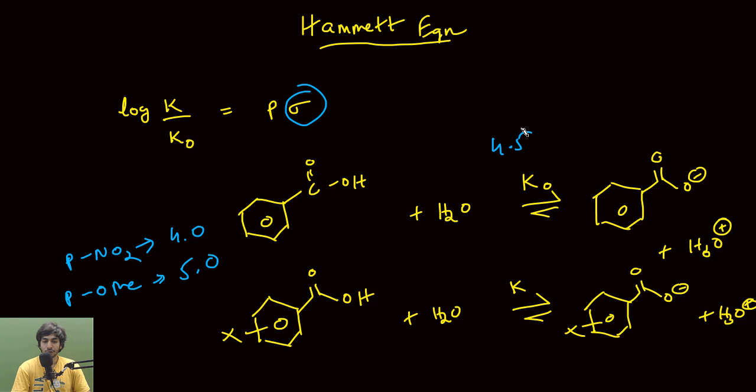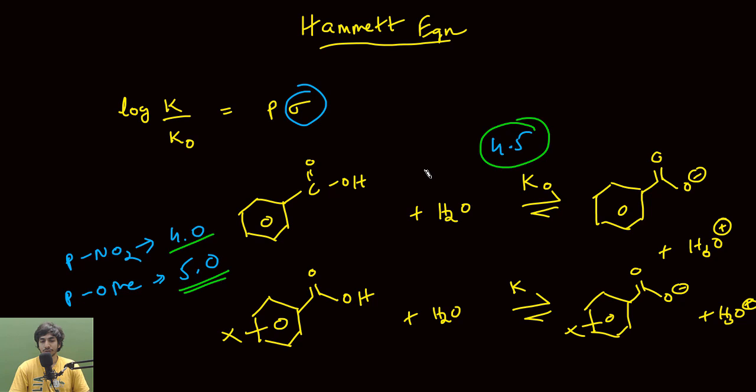So the pKa increases from 4.5 to 5.0 for paramethoxy, and decreases to 4.0 for paranitro. Remember: if the pKa is lower, that means more acidity; if the pKa is higher, that means lesser acidity. So when the methoxy substituent is present, pKa is 5.0; when the nitro group is at the para position, it is 4.0; and for the unsubstituted standard, the value is around 4.5.